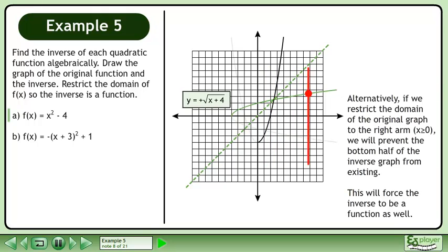Alternatively, if we restrict the domain of the original graph to the right arm, we will prevent the bottom half of the inverse graph from existing. This will force the inverse to be a function as well.